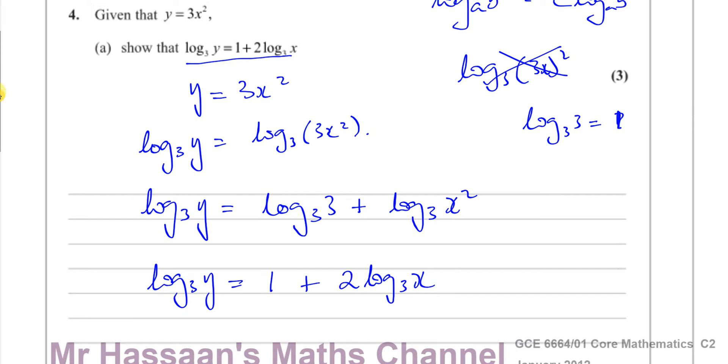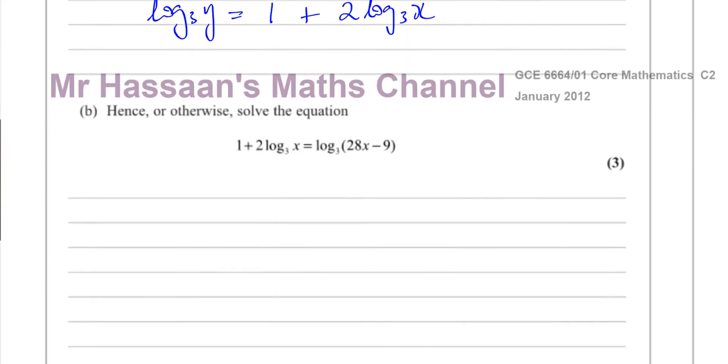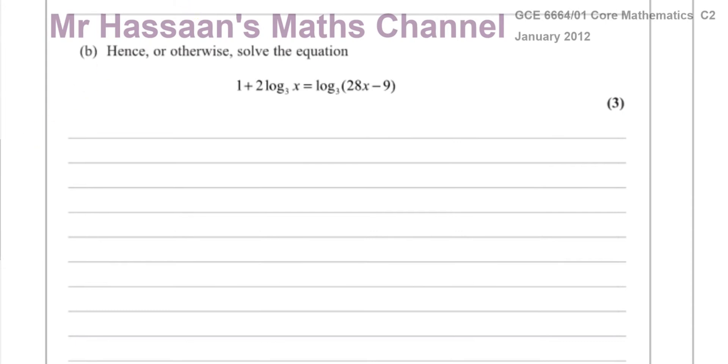And that's done. Now for part B. It says hence or otherwise, solve this equation. Whenever it says hence in a question, it always means using what you've just done. So if we take what we had to show in the first part of the question, that's going to have some bearing on this answer. It says or otherwise, so that means there are other ways to solve it, which there are. However, the hence way is normally the easy way of solving. So if it says hence or otherwise, solve this equation, it means that there's some link between what we've just done now and what we can do to solve this equation.